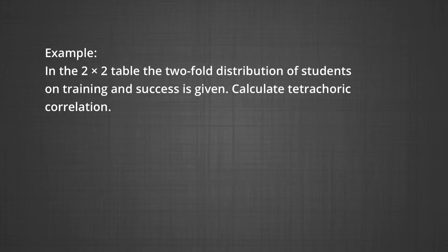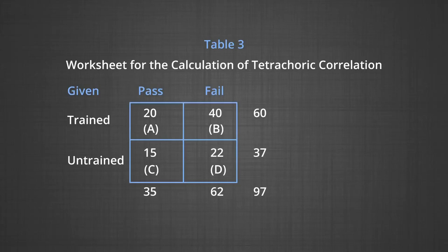Here is an example: In a two-by-two table, the two-fold distribution of students on training and success is given below. Calculate tetrachoric correlation. The table shows the worksheet for calculation of tetrachoric correlation. It's a two-by-two contingency table with pass and fail on top, trained and untrained on the left side. The frequencies given in the cells are 20, 40, 15, and 22. The cells are marked as A, B, C, and D. The marginal totals are 60, 37, and bottom 35, 62 with a grand total of 97.